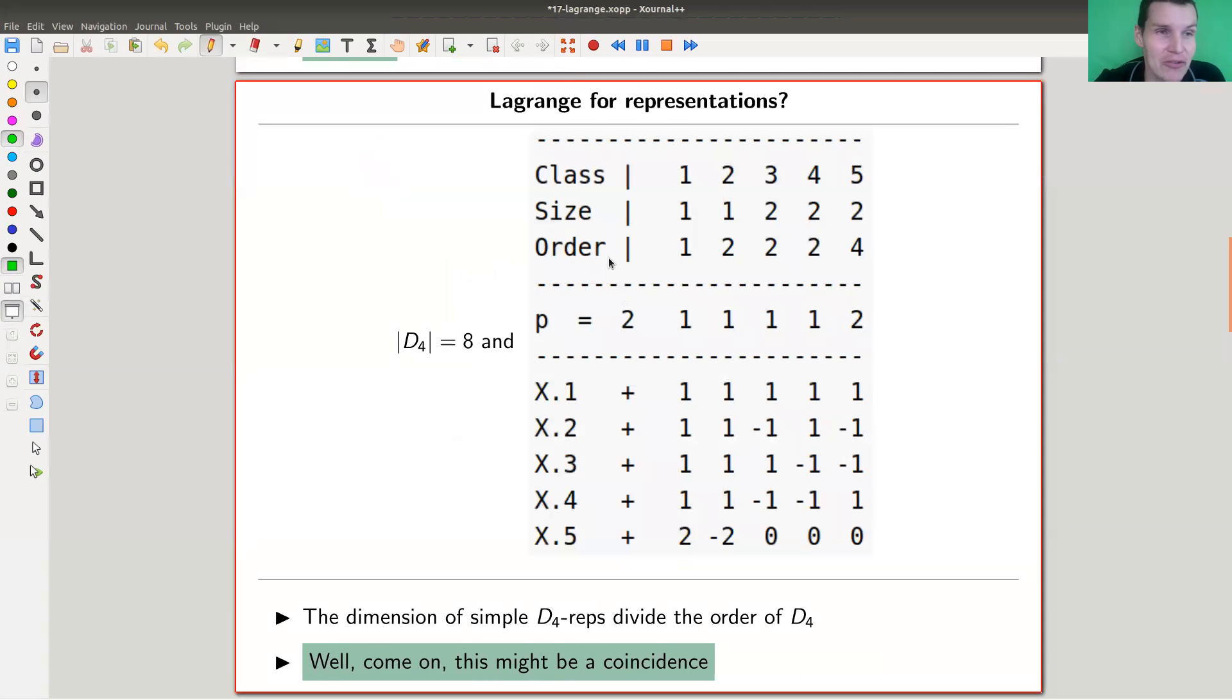Well, how to figure that out? You just look at character tables, of course. As usual, you can use the code linked in the description to ask Magma and Magma will spit out this character table for the same group of order eight.